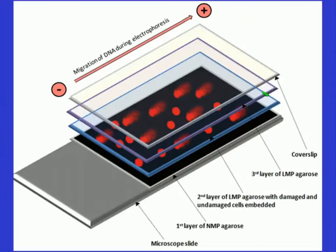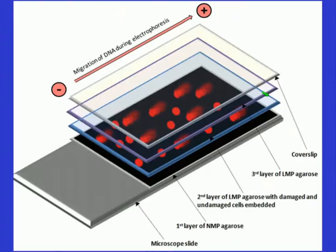This is a diagrammatic representation of how the comets are formed. You can see a normal slide, then a first layer of normal melting point agarose, a second layer of LMP — low melting point — agarose with damaged and undamaged cells, and then a third layer of low melting point agarose on top, and finally a cover slip. The slides are placed in electrophoresis solution, and damaged DNA moves from the negative to the positive end — to the anode. It's called a comet because it looks exactly like Halley's comet.